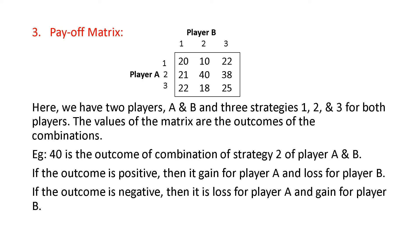Third point is payoff matrix. Two players are there — player A and player B — with strategies 1, 2, 3 forming the matrix. Each cell is the outcome of a combination of strategies. For example, if player A selects strategy 1 and player B selects strategy 2, the outcome is 10. If the outcome is positive, it is a gain for player A and a loss for player B.